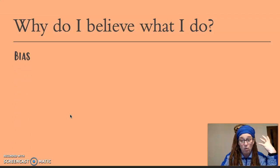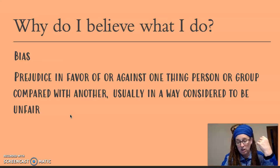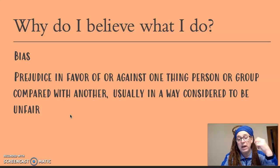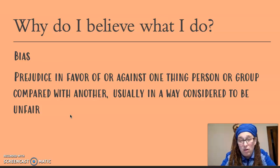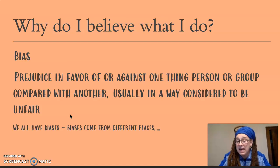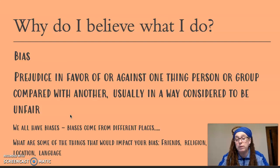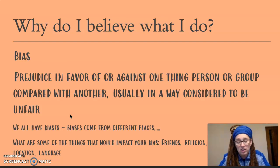Now we have bias. A bias is when you have a tendency to have prejudice in favor of or against one thing, person, or group compared with another — usually in a way that is unfair. Someone may have a bias toward their own race, or say 'that person goes to my church, so I assume they're good.' It doesn't really matter what the group is; when you have a bias, it means you prefer that group. We all have biases, and they come from different places — your friends, religion, culture, family, location, and language. For example, you might say 'I only like English-speaking people' or 'I only like Spanish-speaking people.' Biases are just something that exists.